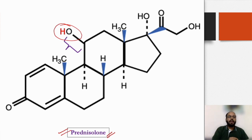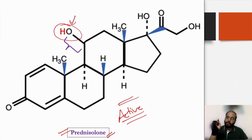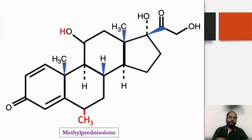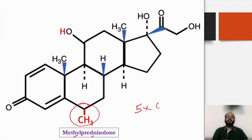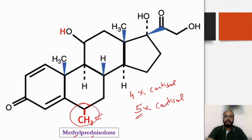Prednisolone already has an 11-beta hydroxyl group, so it is active as administered — no concern about conversion from ketone to hydroxyl in liver disease patients. Adding a methyl group to prednisolone gives methylprednisolone, which has a potency of five times cortisol, whereas prednisolone without the methyl group is four times as potent as cortisol. So simply adding a methyl group increases potency by one factor.